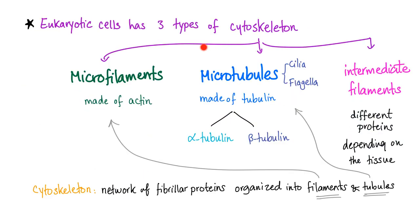The cytoskeleton is divided into microfilaments, microtubules, or intermediate filaments. Microtubules are made of tubulin — alpha or beta. They form cilia, flagella, as well as centrioles.